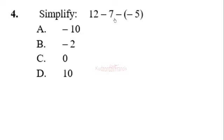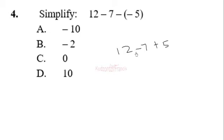Question 4: simplify 12 minus 7 minus negative 5. Deal with the bracket first: negative negative becomes positive, so we have 12 minus 7 plus 5. For addition and subtraction we can work left to right: 12 minus 7 gives 5, then 5 plus 5 gives 10. So the correct answer is 10.